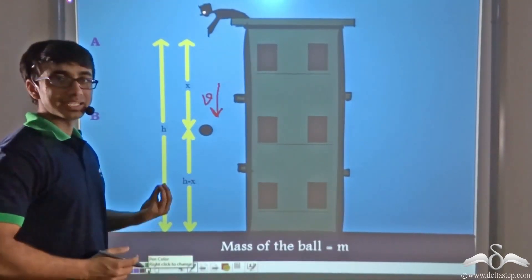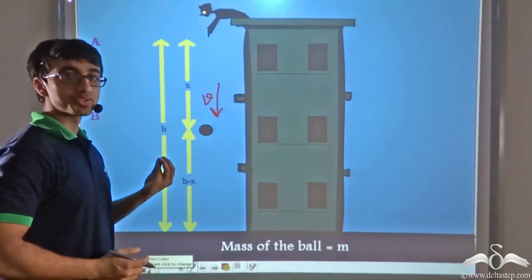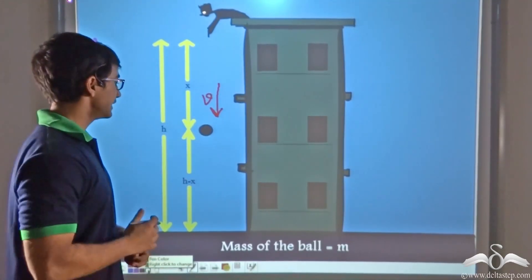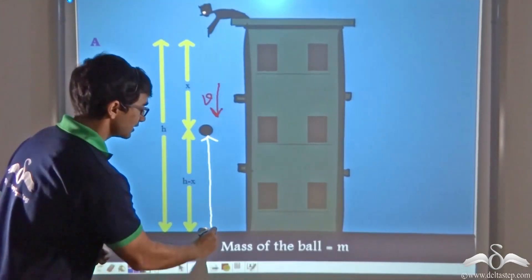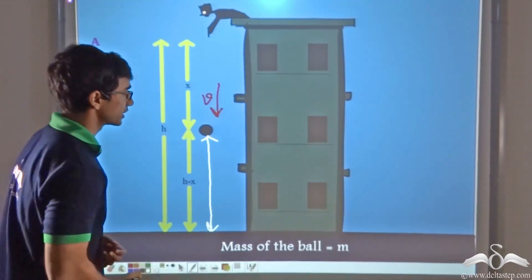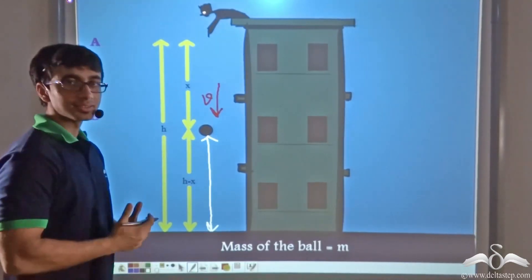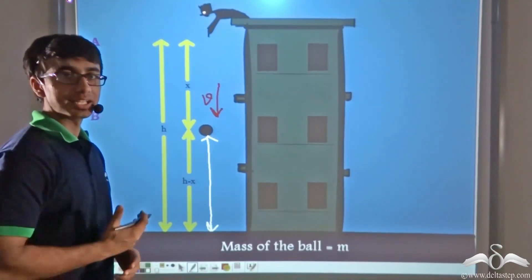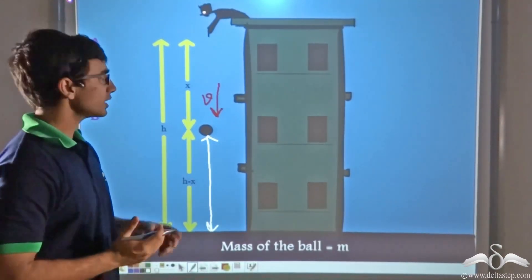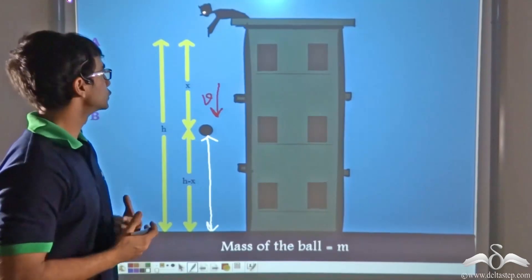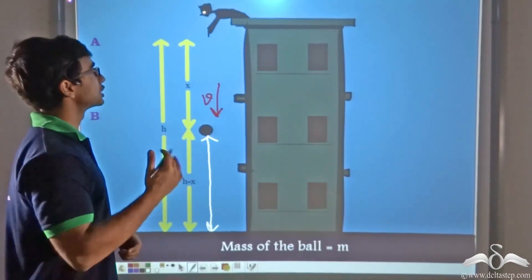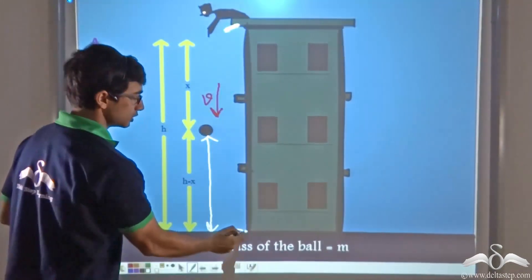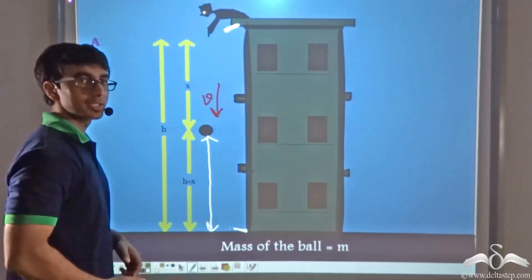Also when the ball is falling, it is placed at a certain position above the ground — it has a certain height from the ground. Thus it also has potential energy. Now we have to prove that in traversing from the top of the building to the bottom,